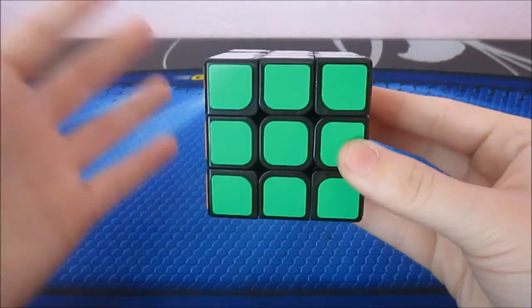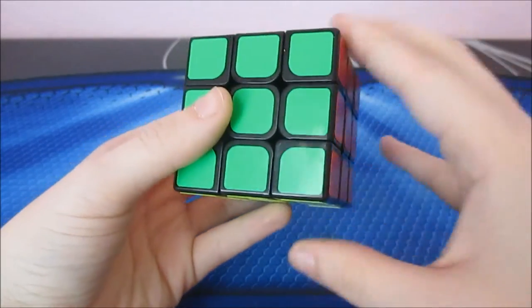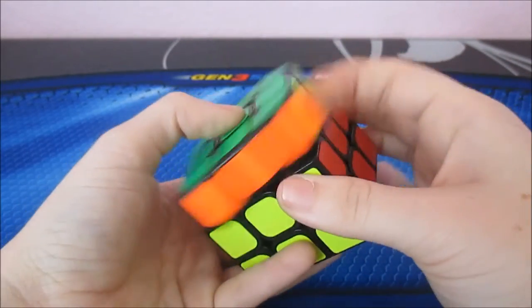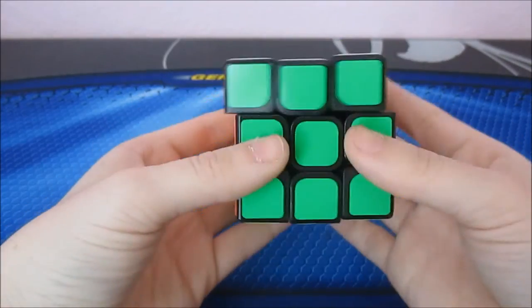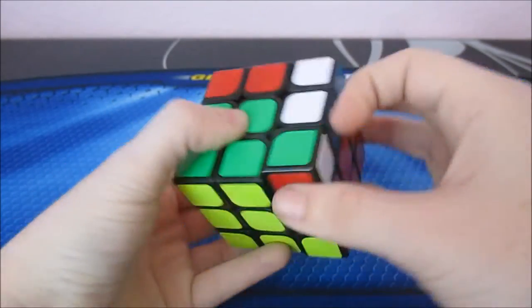So let's go ahead and get into some first turns, and then we'll do some comparisons later. So here we go. Okay. This actually feels a bit sluggish out of the box. It feels a bit tight, but the Liying itself is not a fast cube, so I wasn't expecting it to be fast.